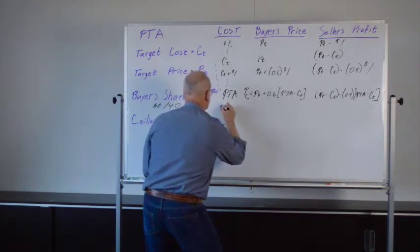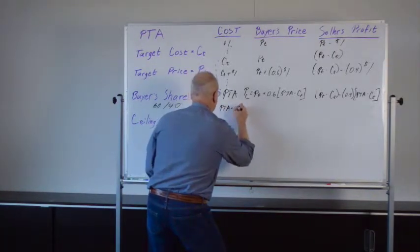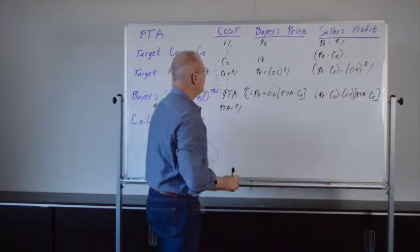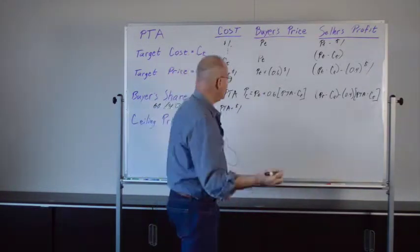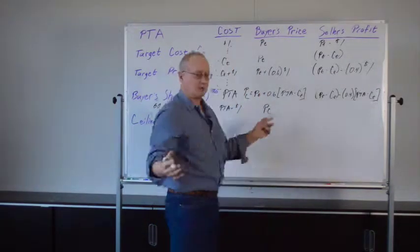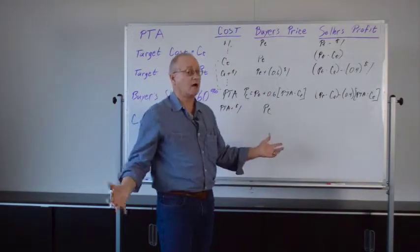Now let's look at the very next dollar of cost overrun, PTA plus a dollar. Here, the buyer's price is P sub C. That's the meaning of the ceiling price. It goes no higher.